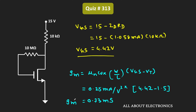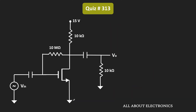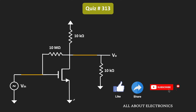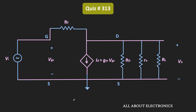Once we know the value of the transconductance, using the small signal analysis we can easily find the voltage gain. For this small signal analysis, we replace all coupling capacitors by short circuits and the DC voltage source acts as zero. Then we replace the MOSFET by its small signal model. In the equivalent circuit, RF is equal to 10 MΩ, RD is equal to 10 kΩ, and the load resistor RL is also equal to 10 kΩ.